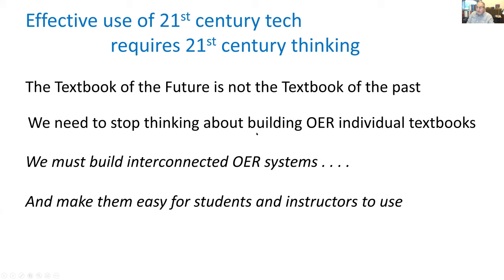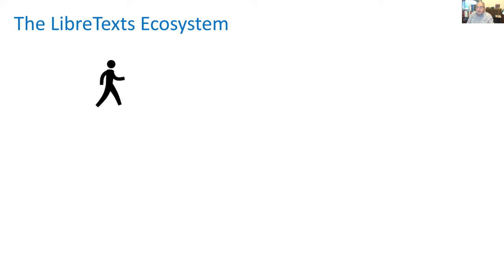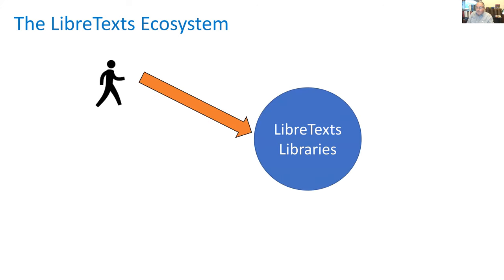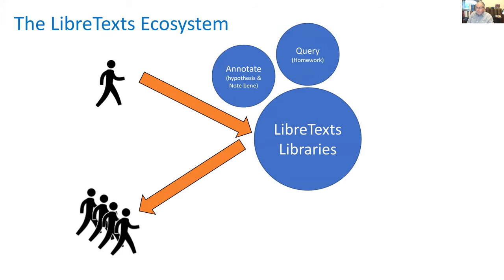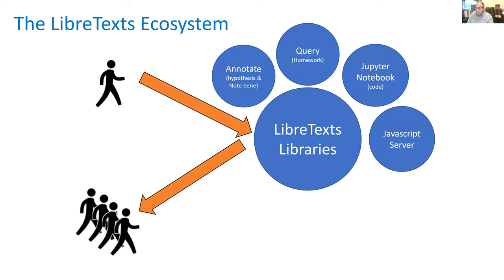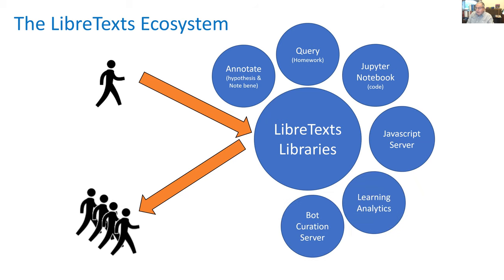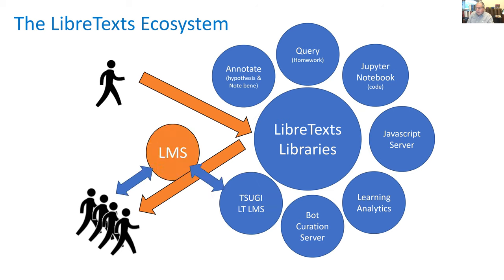Let's talk about the textbook of the future. We need a system — we need to make it easier to use for faculty, students, and everyone. Traditionally with OER, a faculty member finds something in a library and points students to it. But we need more: homework systems, annotation, executable code, JavaScript servers, learning analytics, bots to curate things, and a link to your LMS so everything passes seamlessly back and forth. We need an ecosystem, not just a library.